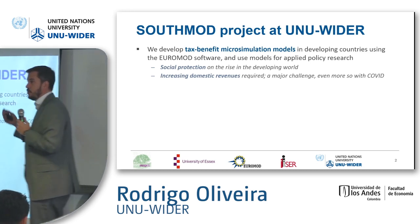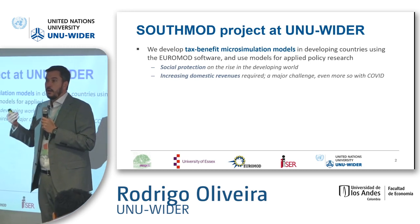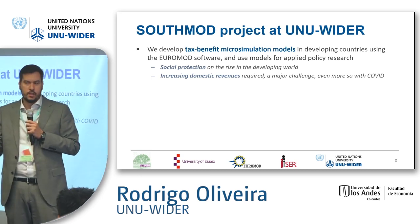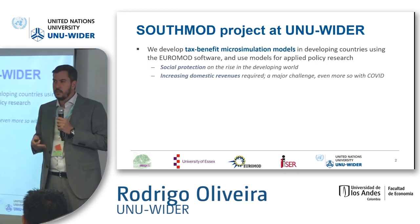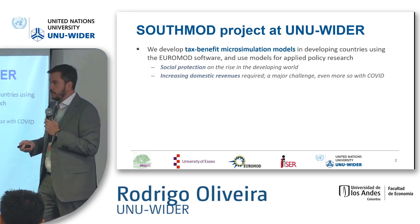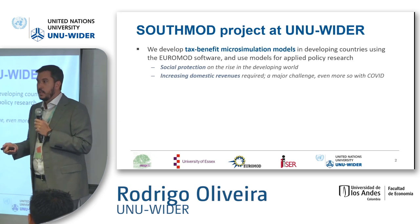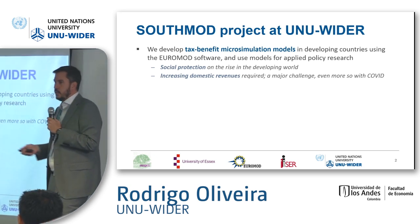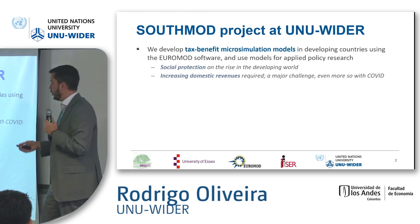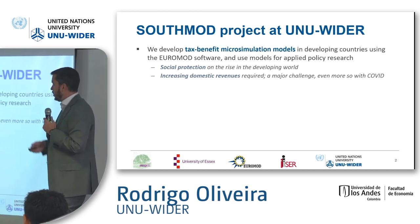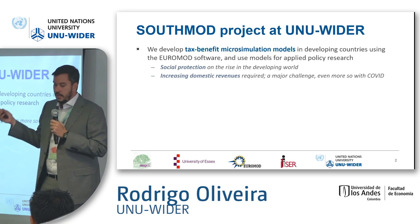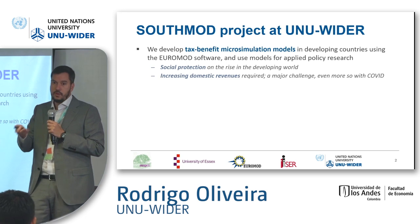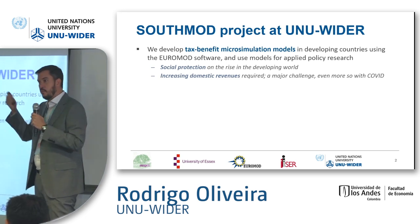Basically, what we do in the project is develop these models for developing countries — mainly in Africa. We have around nine countries in the project. We are developing models for two more countries at the moment: Rwanda and Zanzibar. We also have Latin American models, and there is a huge initiative that Javier and others are leading to create models for more countries.